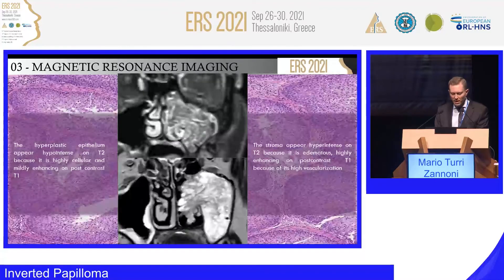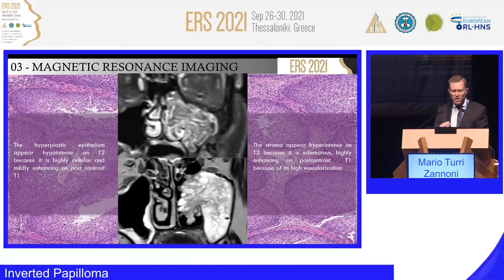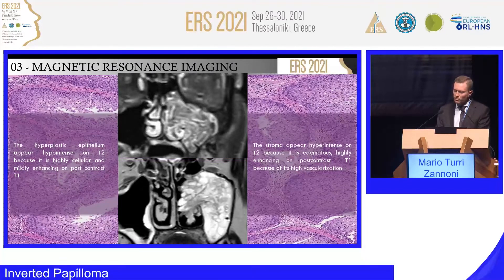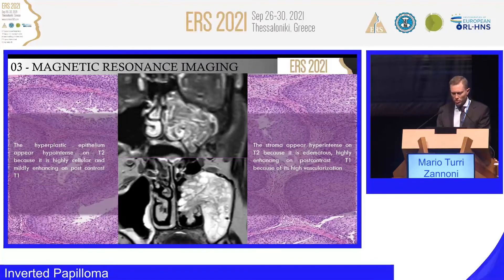This convoluted cerebriform pattern is based on the histological composition of the tumor. The hyperplastic epithelium, which is very rich in cells with high cell density, appears hypo-intense in T2 and hyper-intense with contrast enhancement. Conversely, the stroma of the lesion, which is edematous, appears hyper-intense in T2. So this convoluted cerebriform pattern exactly mirrors and reflects the histological composition of the tumor.